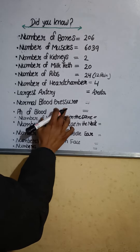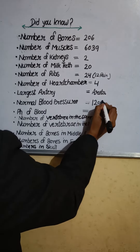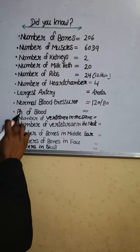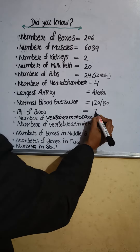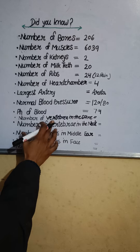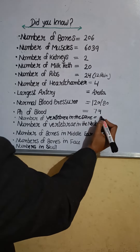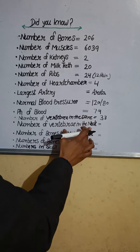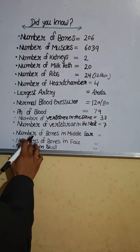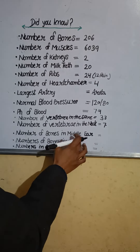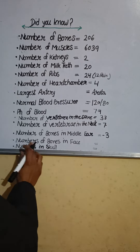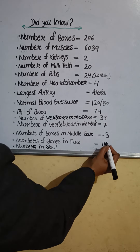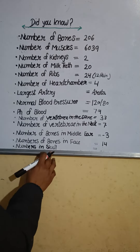Normal blood pressure: 120/80. pH of blood: 7.4. Number of vertebrae in the spine: 33. Number of vertebrae in the neck: 7. Number of bones in the middle ear: 3. Number of bones in the face: 14. Number of skull bones: 22.